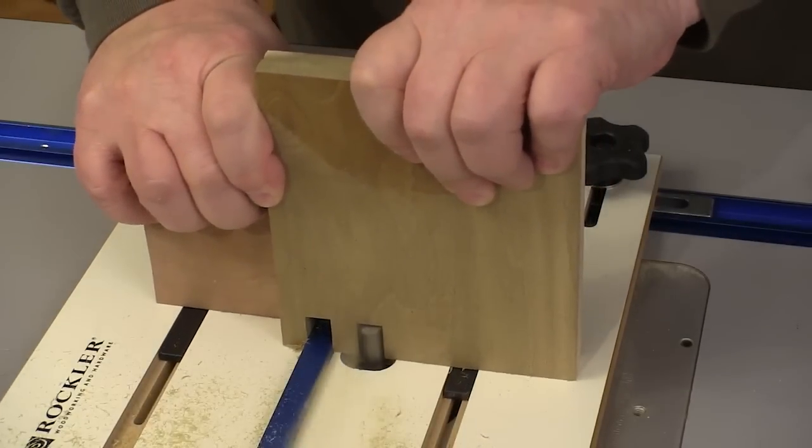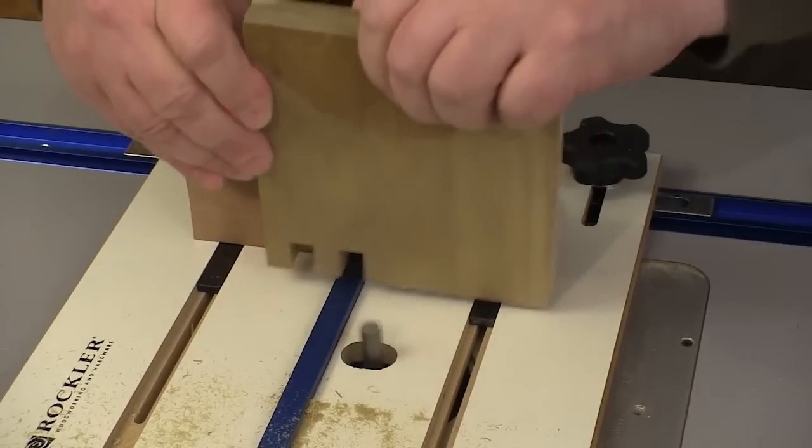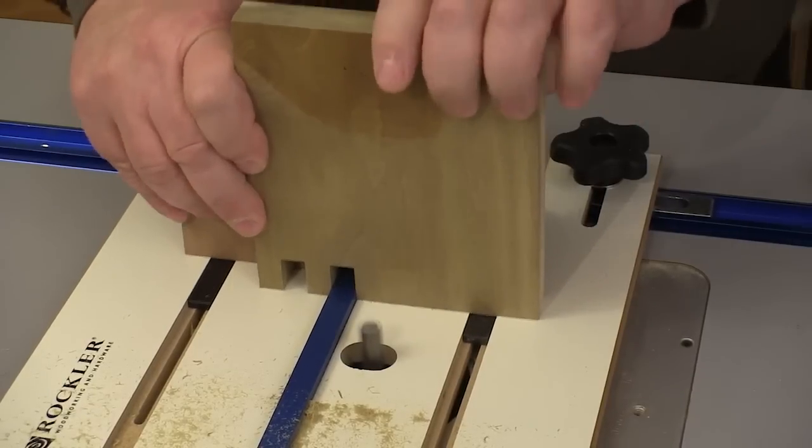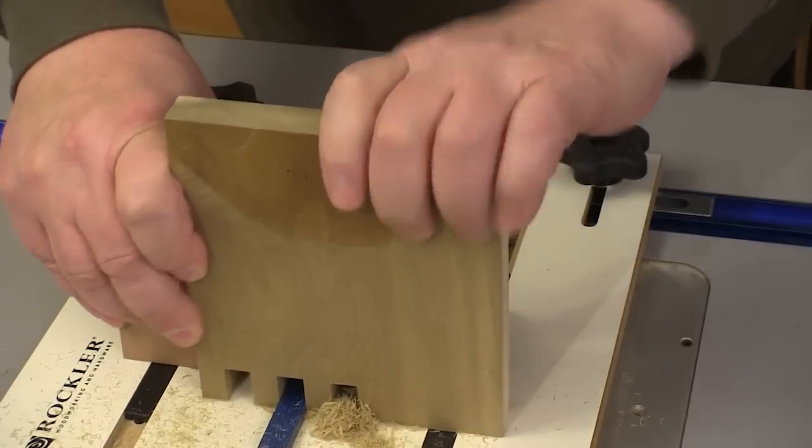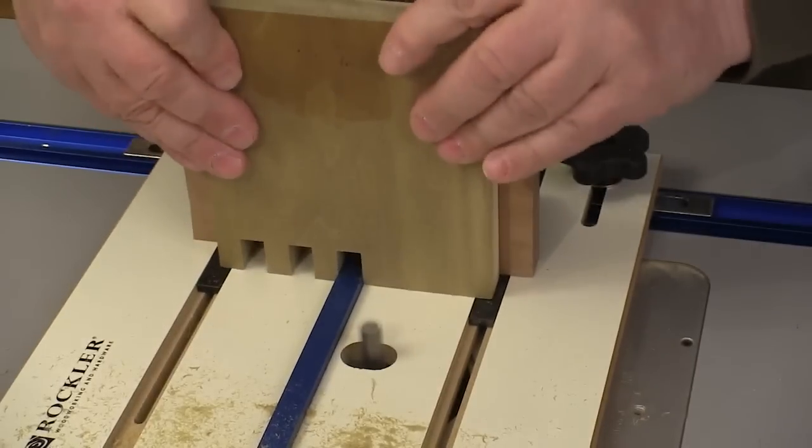One of the nice things about a box joint jig is that the procedure remains the same all the time. You notice that the new cut doesn't just drop right down over the key because it's a very close fit and that's exactly what we want to make an accurate joint.